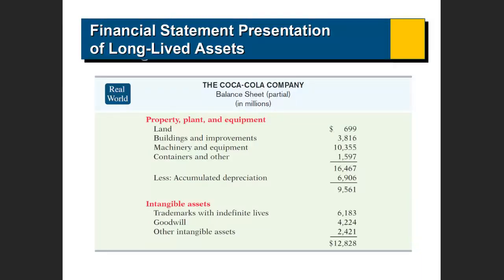On the balance sheet presentation: property, plant and equipment is shown with accumulated depreciation to arrive at the book value, and intangible assets are listed separately. For intangible assets, you can record accumulated amortization as a separate line, or you can reduce the value of the asset itself. Both options are acceptable.